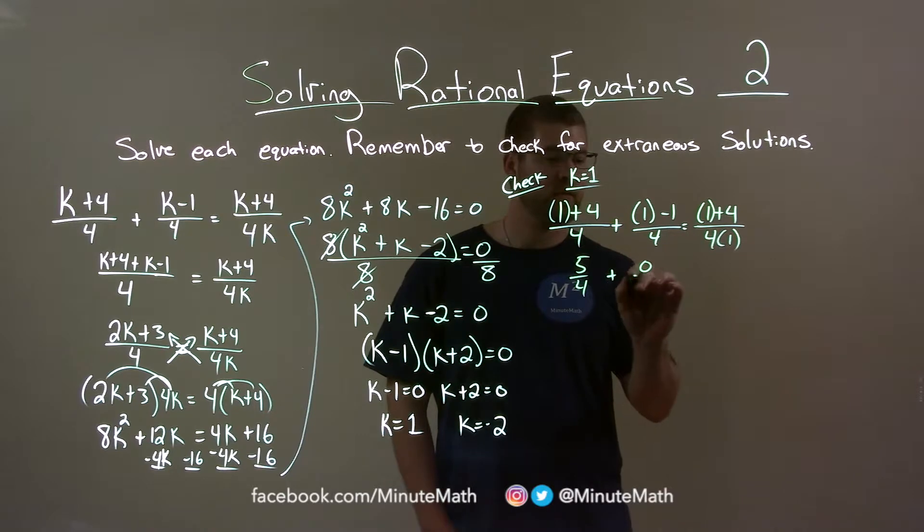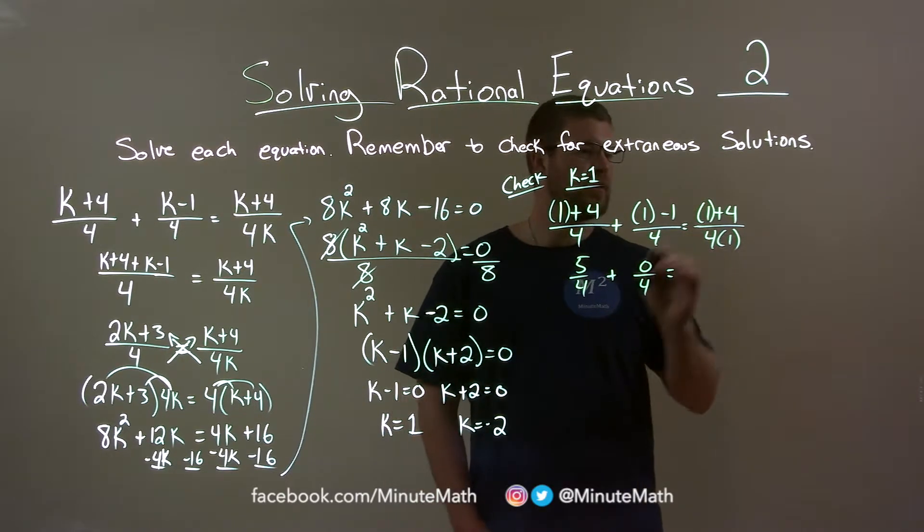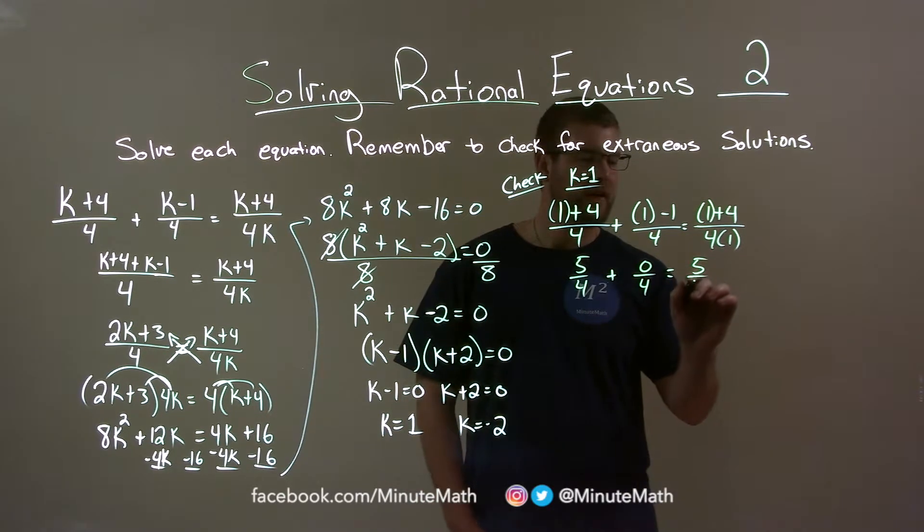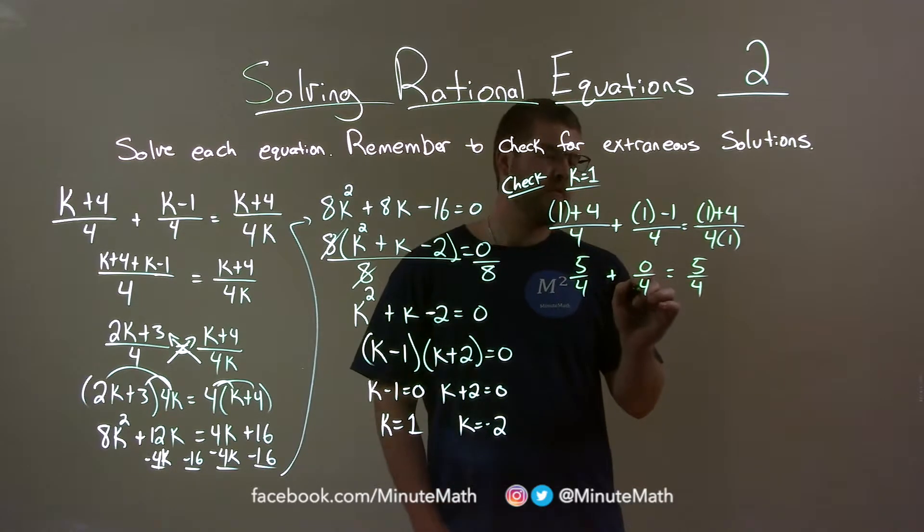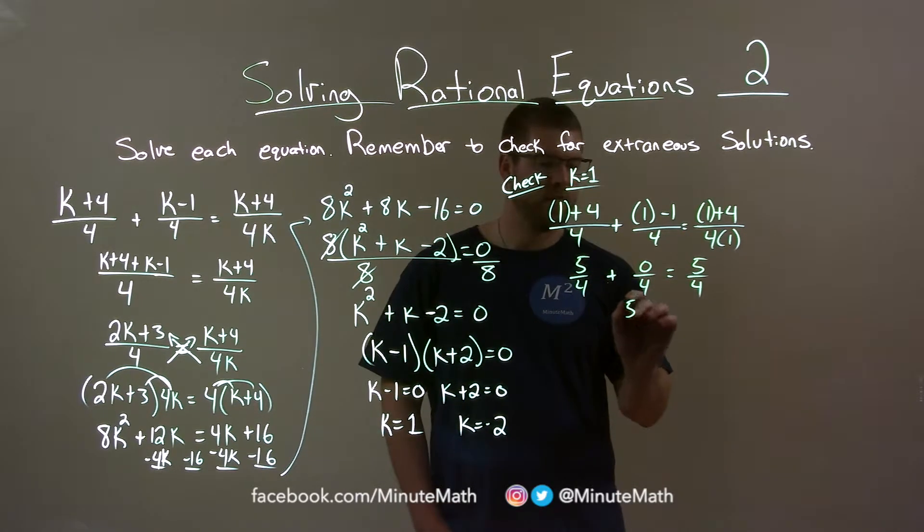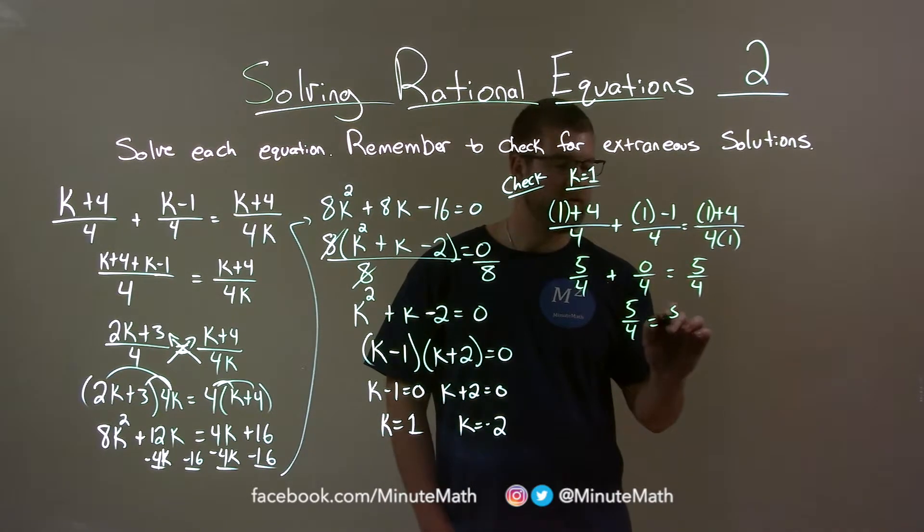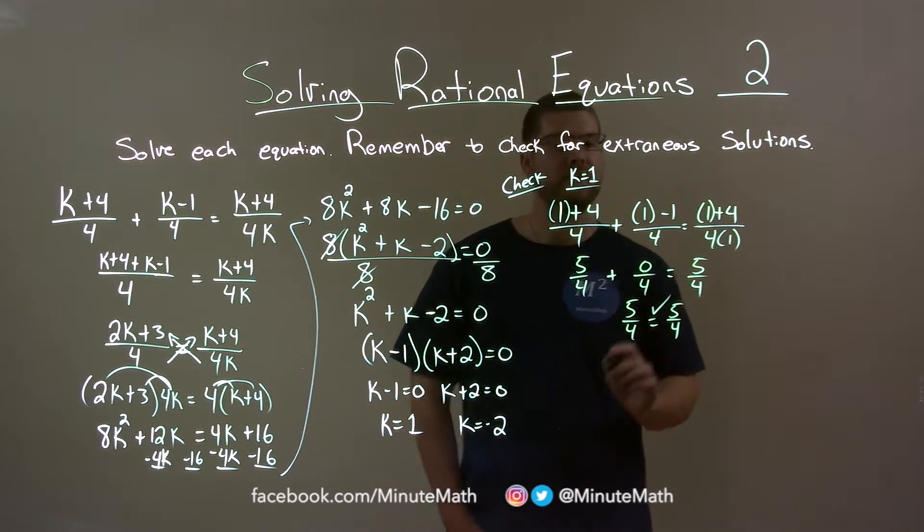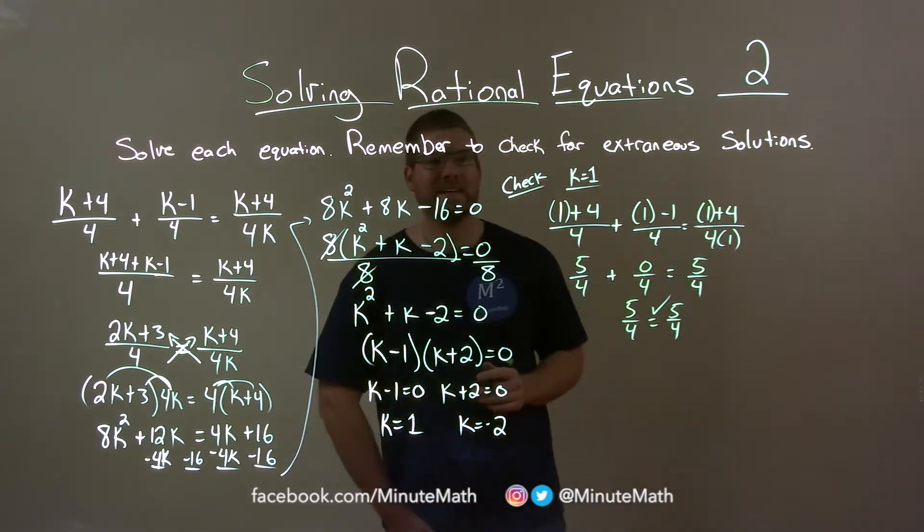Plus, 1 minus 1 is 0. So we have 0 fourths. And 1 plus 4 is 5, 5 fourths. Well, 0 over 4 is 0. And so we have 5 fourths here equals 5 fourths. Since that's a true statement, we know 1 is a true solution.